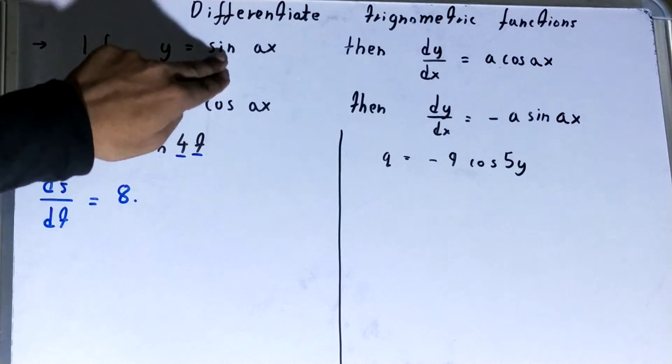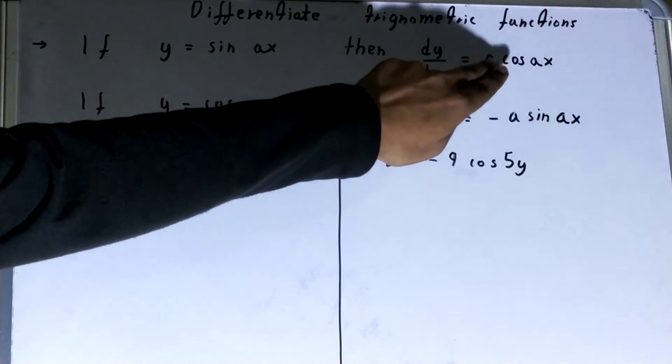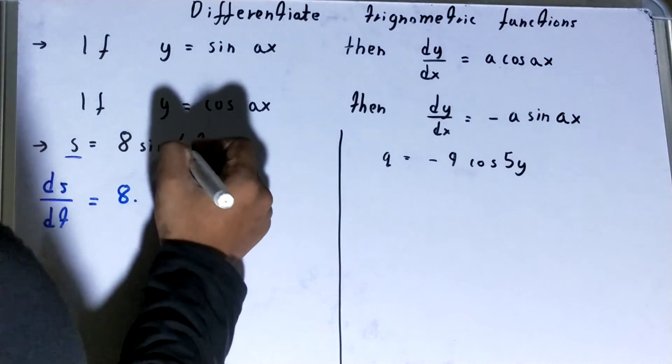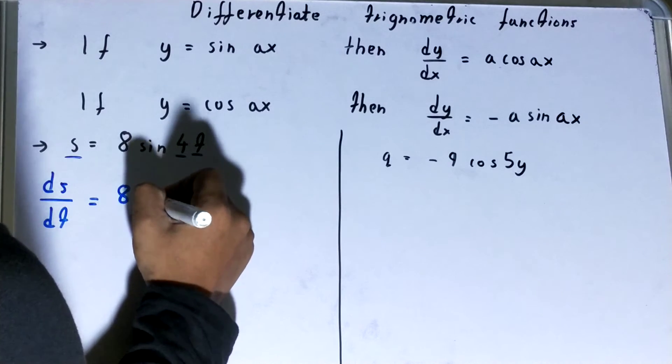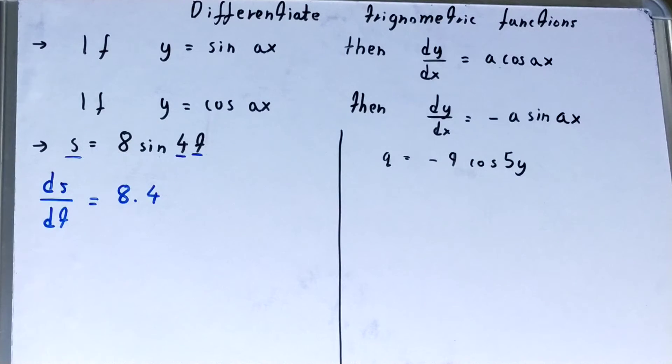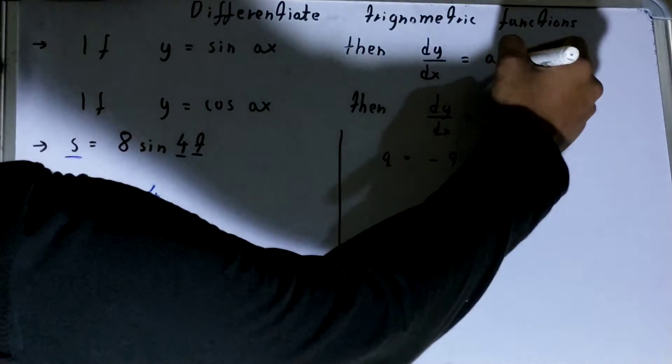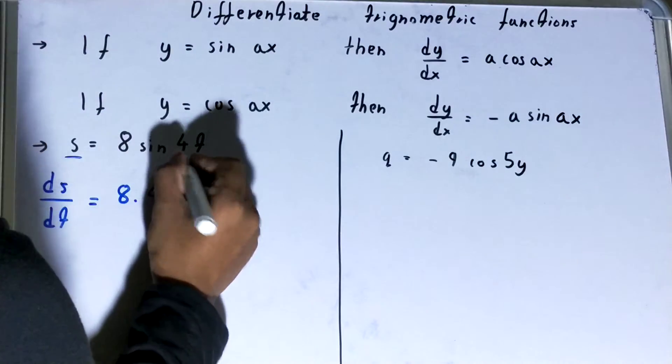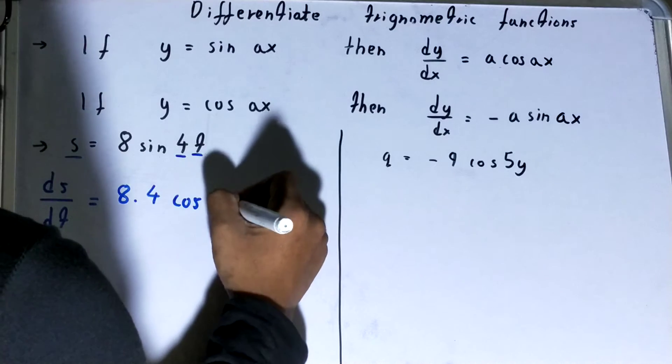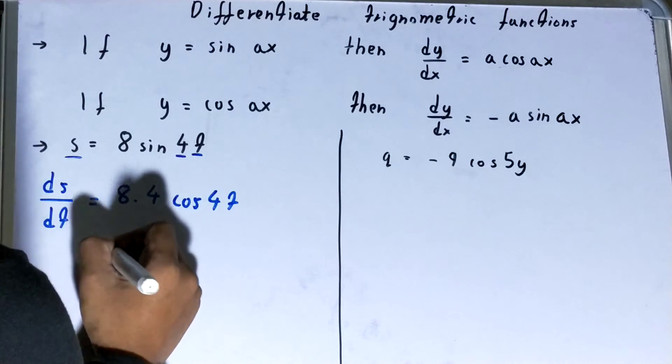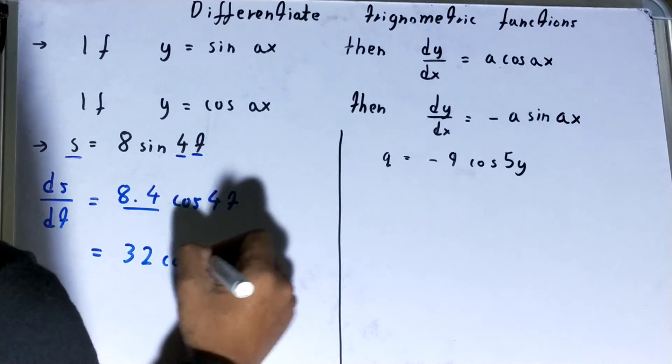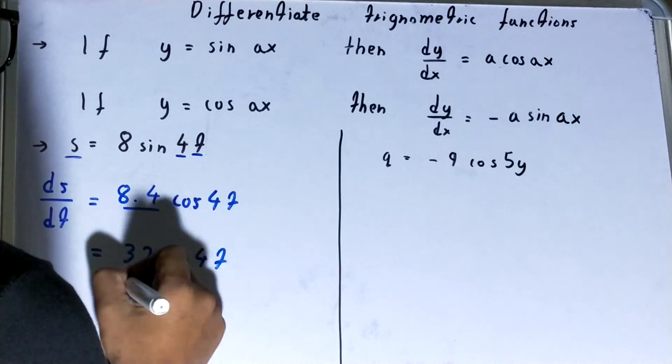If it is a differentiation of sine ax, we need to write the coefficient of x at front also. So the coefficient of x is 4, so we'll write it in front also. Then cos, so cos, then ax. Then a is 4, x is t.